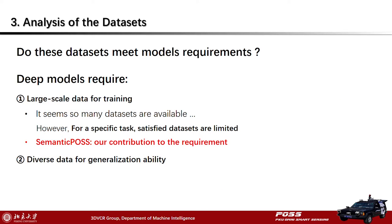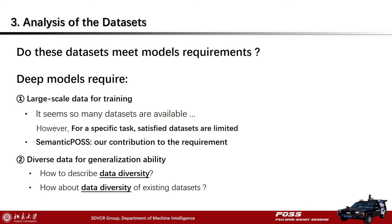After a brief introduction of Semantic POS, let's focus on the second requirement: deep models require diverse data for generalization ability. The question is — how do we describe data diversity, and what is the data diversity of existing datasets? We will give further analysis below.